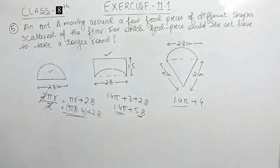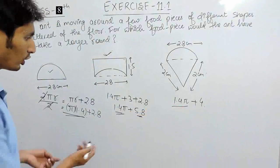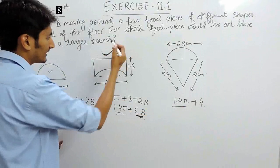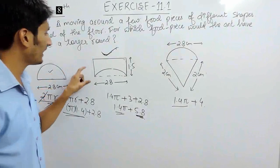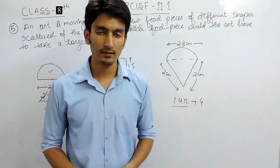So we can simply say that from all the three values, this first is same but according to the second, this value is greater or you can say for this piece of food, the ant has to travel more because the perimeter here is more.